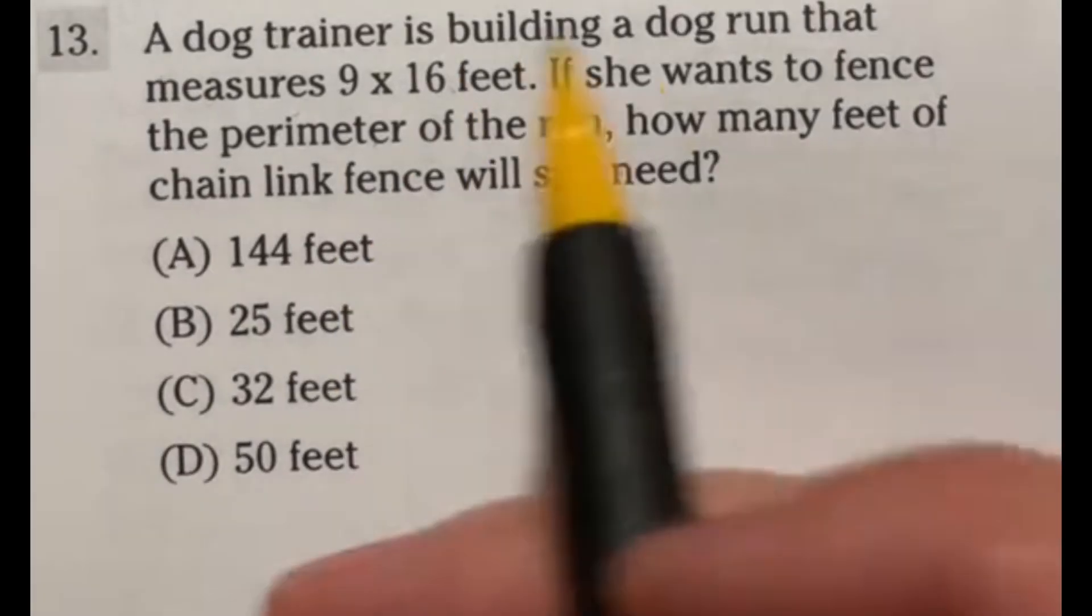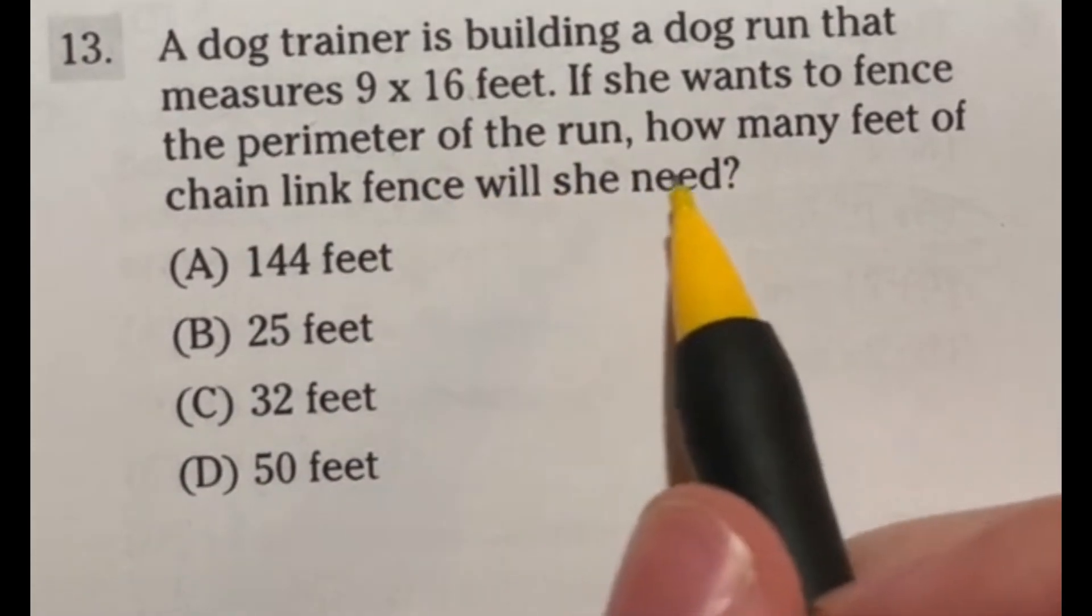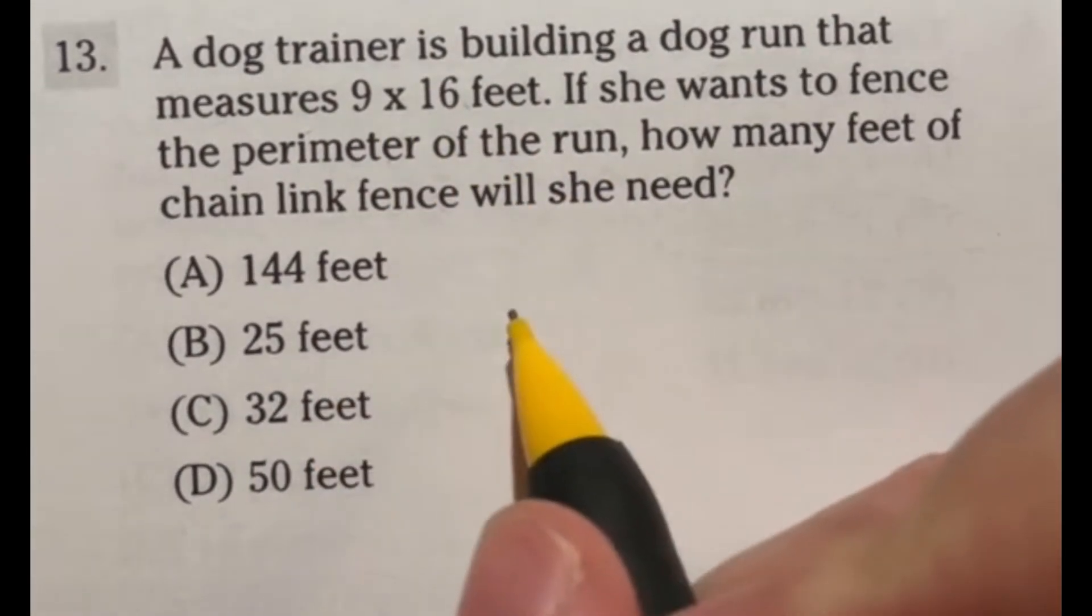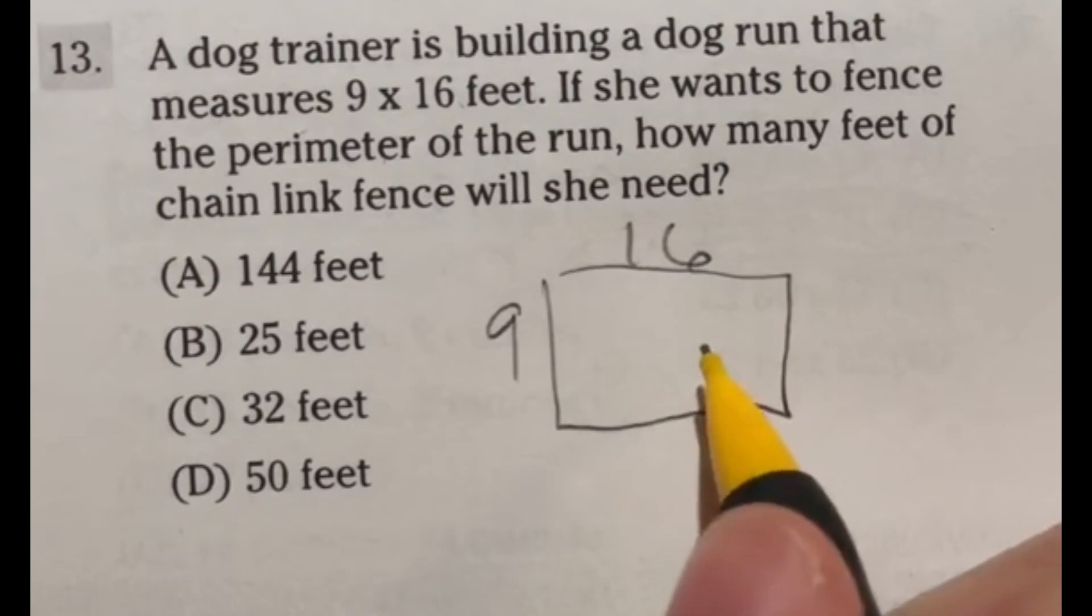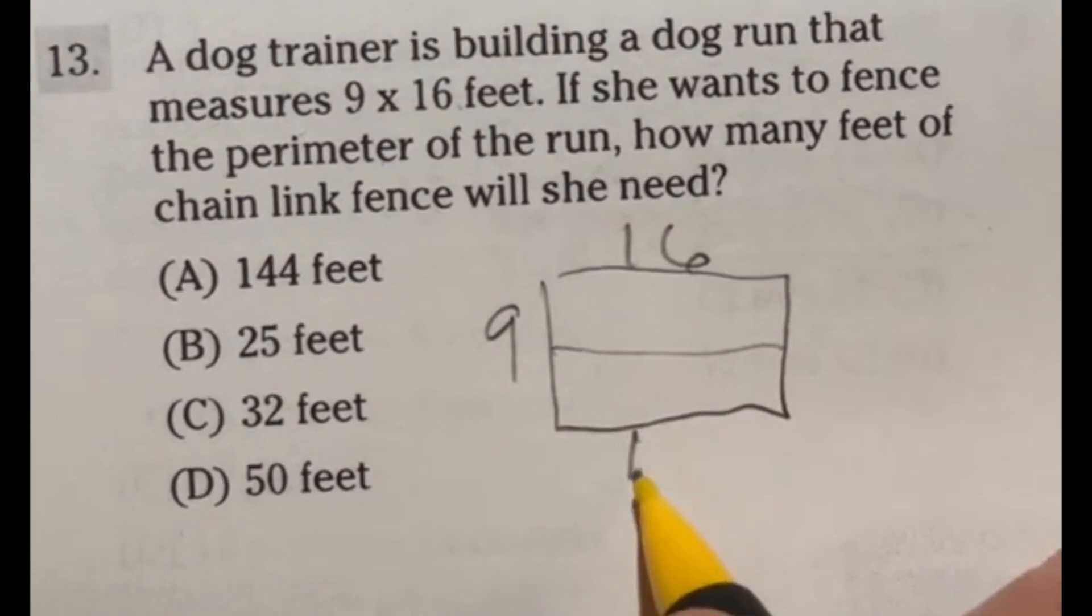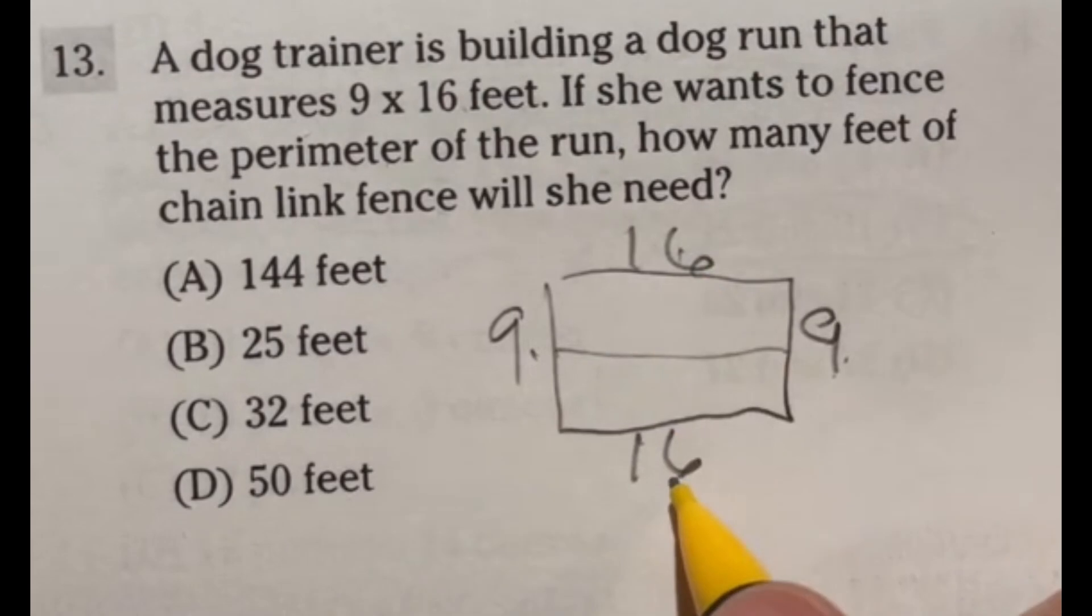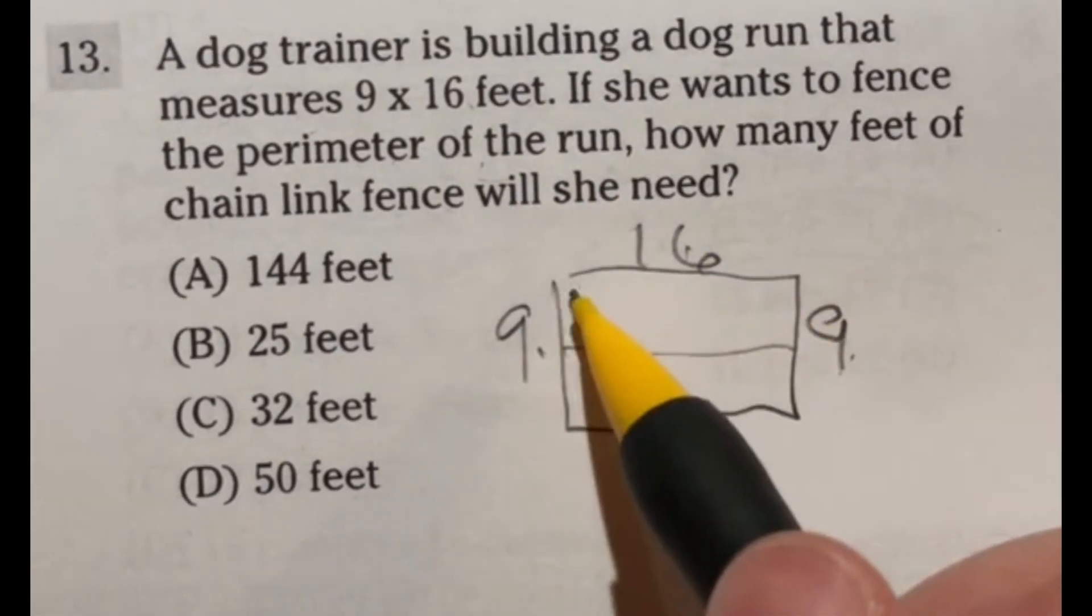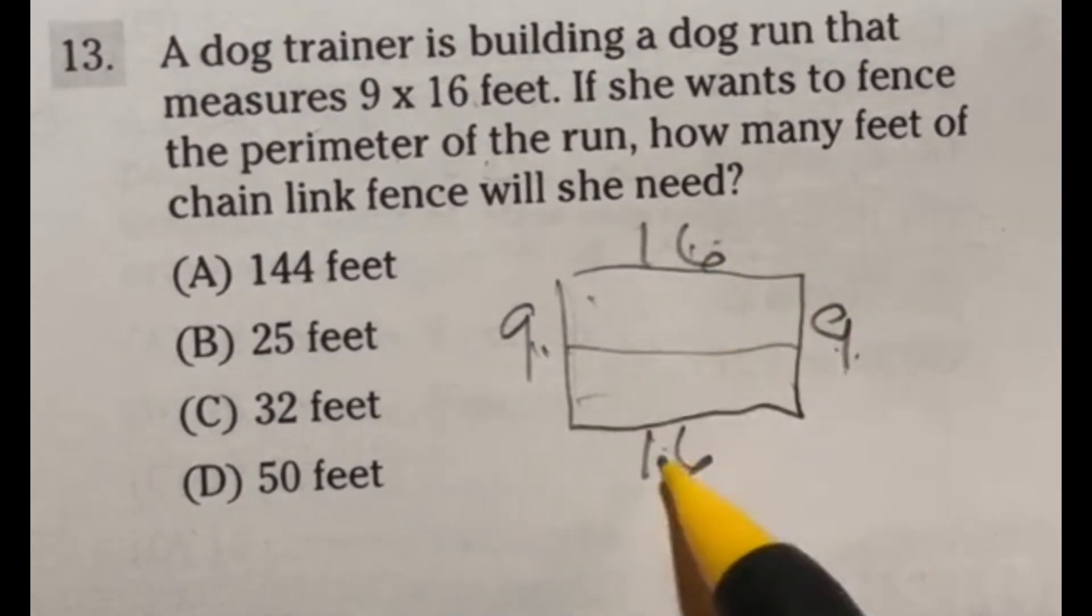A dog trainer is building a dog run that measures 9 by 16 feet. If she wants to fence the perimeter of the run, how many feet of chain link fence will she need? So we're talking about a 9 by 16 rectangle here. So I'm assuming the dog run goes down the middle and they can go 9 by 16. So if I'm looking at this, it's a rectangle. So we're talking about 9 by 9 and 16 by 16, and they want to know the perimeter of this fence. So we're going to be going all the way around. Perimeter means around the outside.